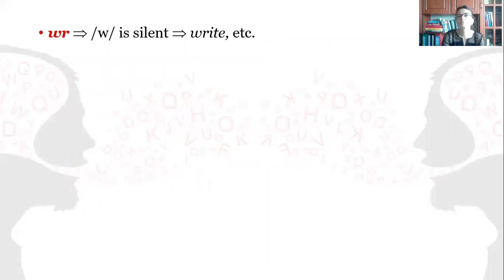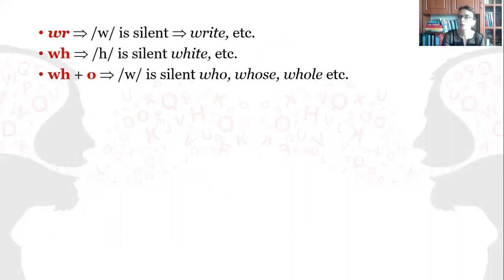Now, WR plus A, the W is silent, as in write. WH plus K is silent, as in white. However, if WH is followed by O, then W is silent. And we have the examples who, whose, whole.